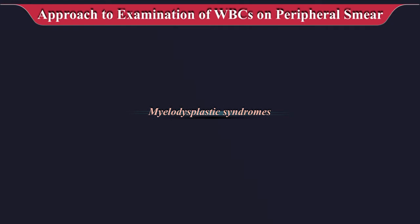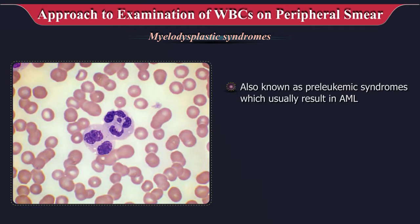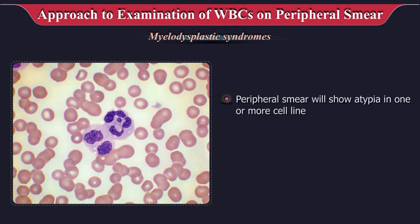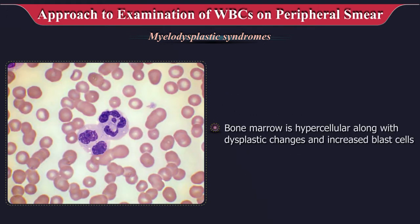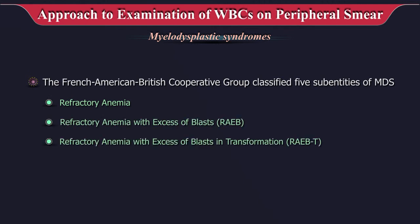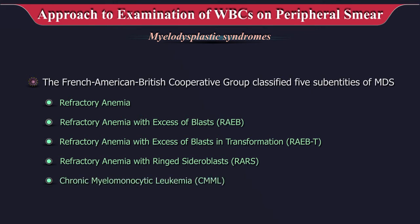Myelodysplastic syndrome or MDS, also known as pre-leukemic syndromes, usually results in acute myeloid leukemia. They are characterized by cytopenias on peripheral smear — anemia, thrombocytopenia, and leukopenia. The peripheral smear shows atypia in one or more cell lines of leukocytes, erythrocytes, and platelets. Bone marrow is hypercellular with dysplastic changes and increased blast cells. The FAB group classifies 5 sub-entities: refractory anemia, refractory anemia with excess blasts, refractory anemia with ringed sideroblasts, and chronic myelomonocytic leukemia.